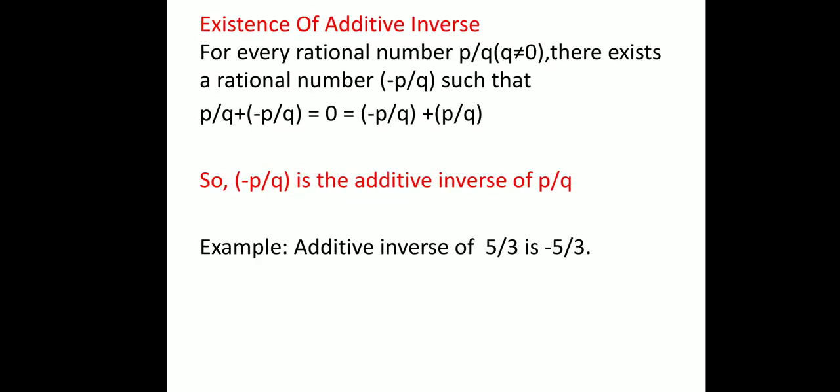Now, existence of additive inverse: since 0 is the additive identity, we use that concept to find the additive inverse. For every rational number P/Q (Q ≠ 0), there exists a rational number −P/Q such that adding them gives 0. If I take a positive rational number and add the negative of that same number, the answer is 0. So −P/Q is the additive inverse of P/Q. For example, the additive inverse of 5/3 is −5/3. To find the additive inverse, simply take the negative of the given rational number.